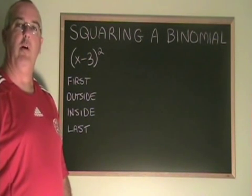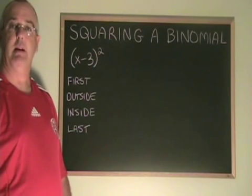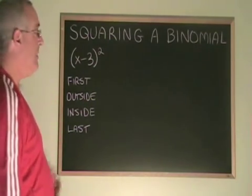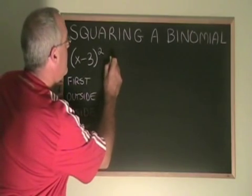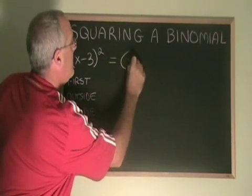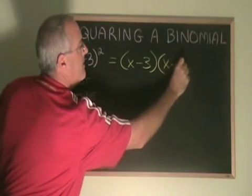When we are asked to square a binomial, we are just being asked to multiply that binomial by itself. Our example is (x-3)². This is the same as (x-3) times another (x-3).